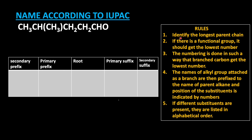Look at the first rule: identify the longest parent chain. If there is a functional group, it should get the lowest number. Here, CHO — the aldehyde group — is present, so it is a functional group and should get the lowest number. The numbering is done so that branched carbons also get the lowest number. Here, one substituent — a methyl group — is present, so we must consider this methyl group as well.